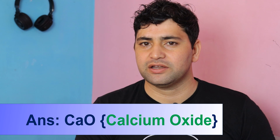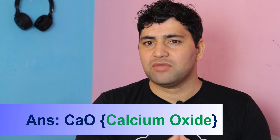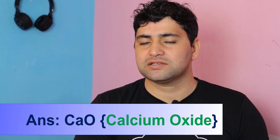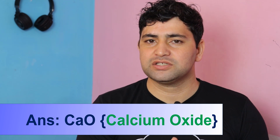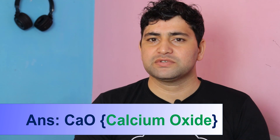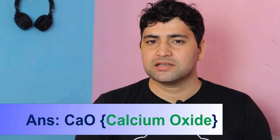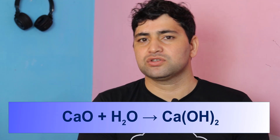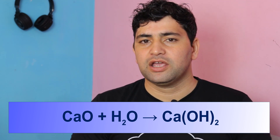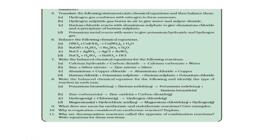Calcium hydroxide is actually formed when calcium oxide reacts with water. Therefore, in this question, substance X is calcium oxide. The answer to the first question: the name of substance X is calcium oxide, and its chemical formula is CaO. For the second question, when calcium oxide reacts with water it forms calcium hydroxide — we already did this as an example of combination reaction.